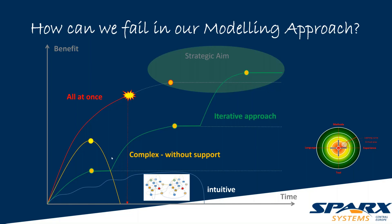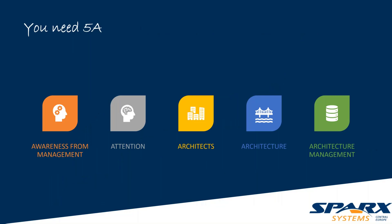There are many possibilities to fail, so it's very clever to think in big wins and short wins, and share the launches with people. What do you need? I've tried to find five A's. You need awareness from management — Enterprise Architect makes the starting point very easy. You can download the trial version even without registering. You need to get your work noticed with Enterprise Architect, otherwise it won't grow in the organization. You need attention, you need to spend time with your models — almost daily. You need architects, architecture, and architecture management.